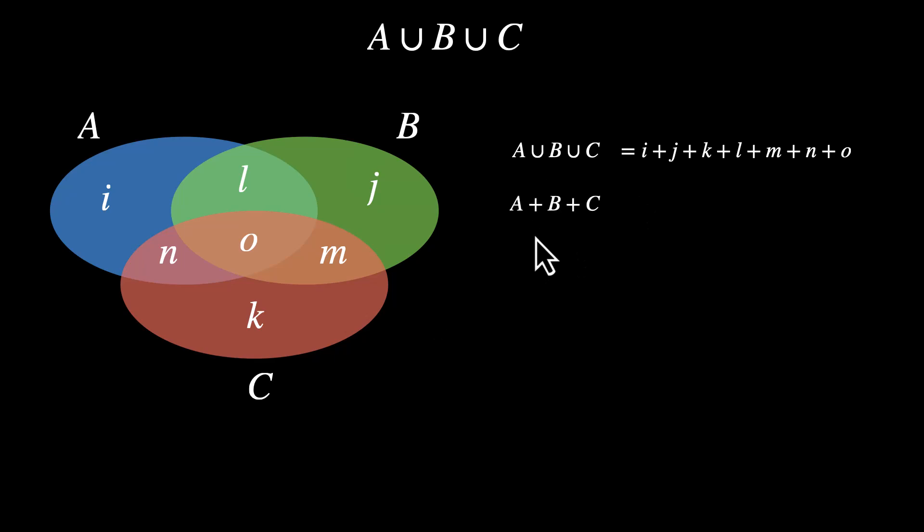Okay, let's do this together. Let's add A plus B plus C. This entire region A plus this entire region B plus this entire region C. We'll definitely get all of these, but we'll get some overlaps as well. Let's see what we have. A is I plus L plus N plus O. These four regions.